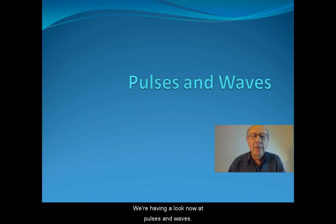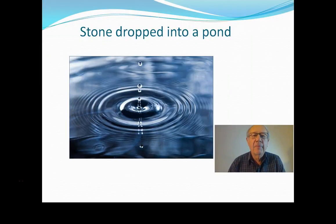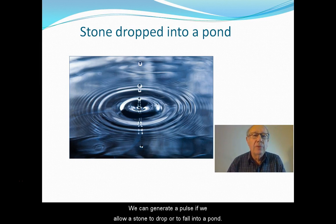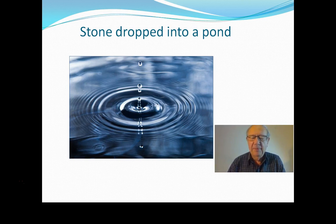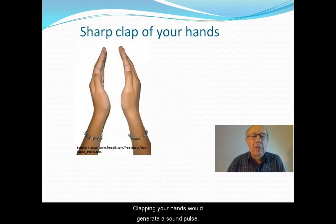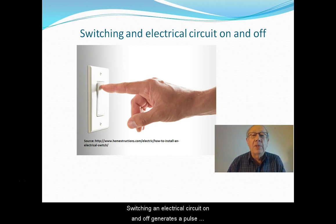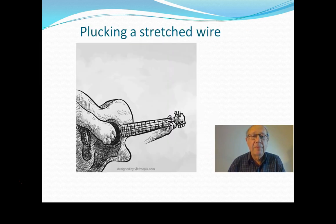We're having a look now at pulses and waves. We can generate a pulse if we allow a stone to drop or fall into a pond — a pulse spreads out across the water. Clapping your hands would generate a sound pulse. Switching an electrical circuit on and off generates a pulse of a radio wave. Plucking a stretched string generates a sound pulse.